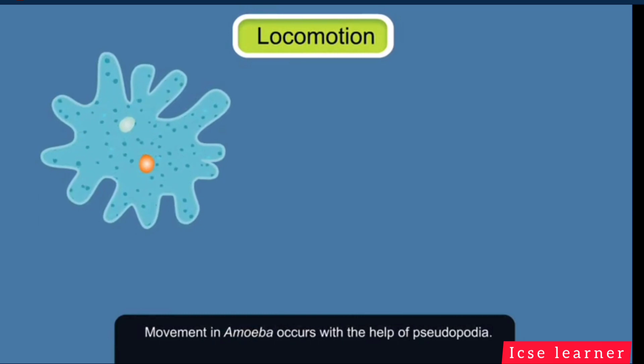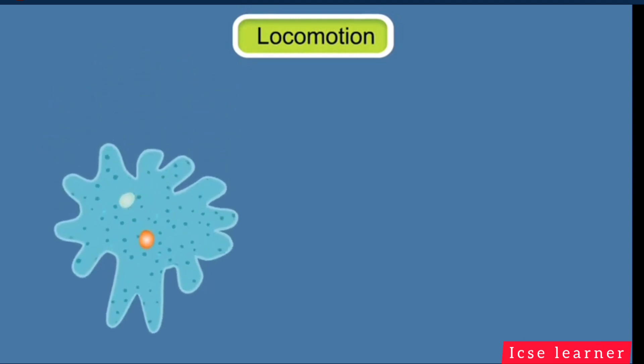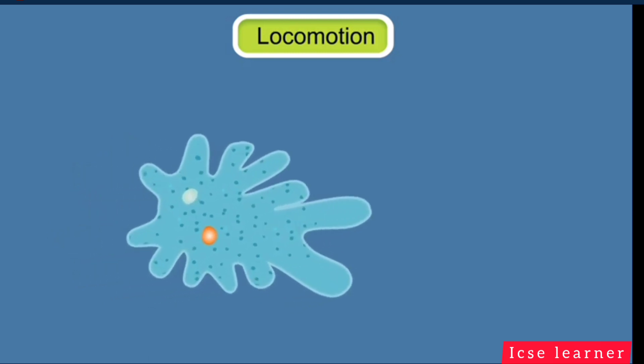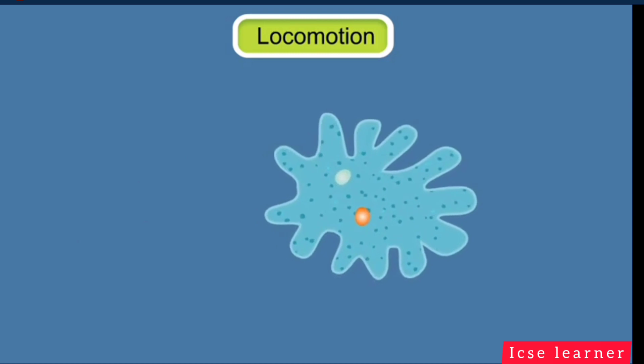Locomotion. Movement in amoeba occurs with the help of pseudopodia. During movement, amoeba forms a pseudopodium in the direction of movement. The protoplasm of the cell then flows in that direction, causing the pseudopodium to move further ahead.